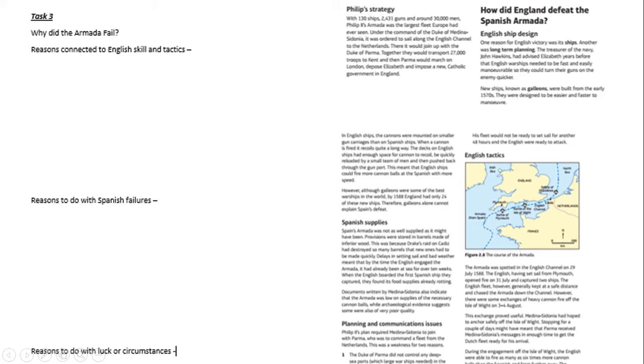The three categories are: reasons connected to English skill and tactics — the things the English got right; reasons to do with things the Spanish failed at; and reasons that were just to do with luck or circumstances. Go to Task 3 in your booklet, use the information on the following two pages, and bullet-point notes on why the Armada failed under those three headings.